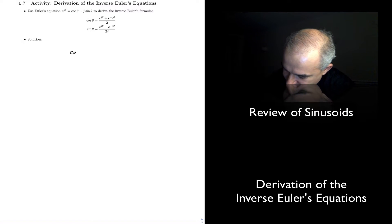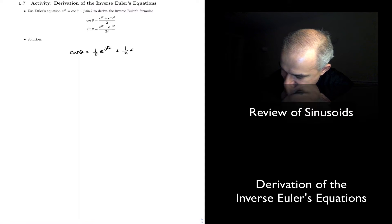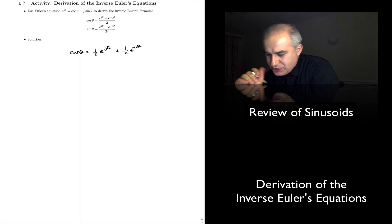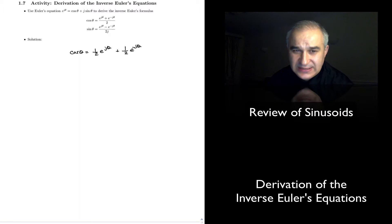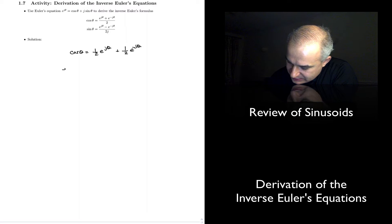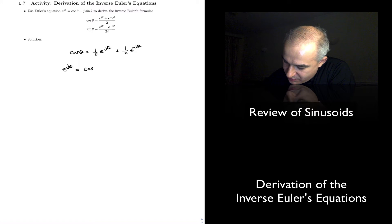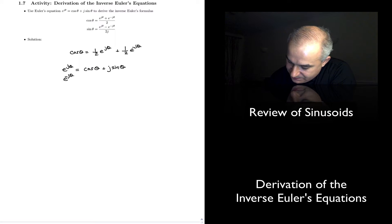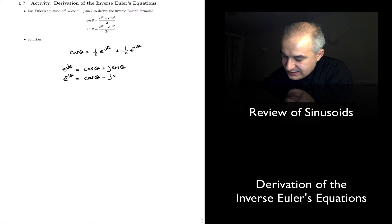What we are trying to prove is that the cosine of theta is actually made out of one half E to the j theta plus one half E to the minus j theta. A good way to do this is by noting that Euler's relationship tells us E to the j theta is equal to cosine of theta plus j sine of theta. Similarly, E to the minus j theta is equal to cosine of theta minus j sine of theta.